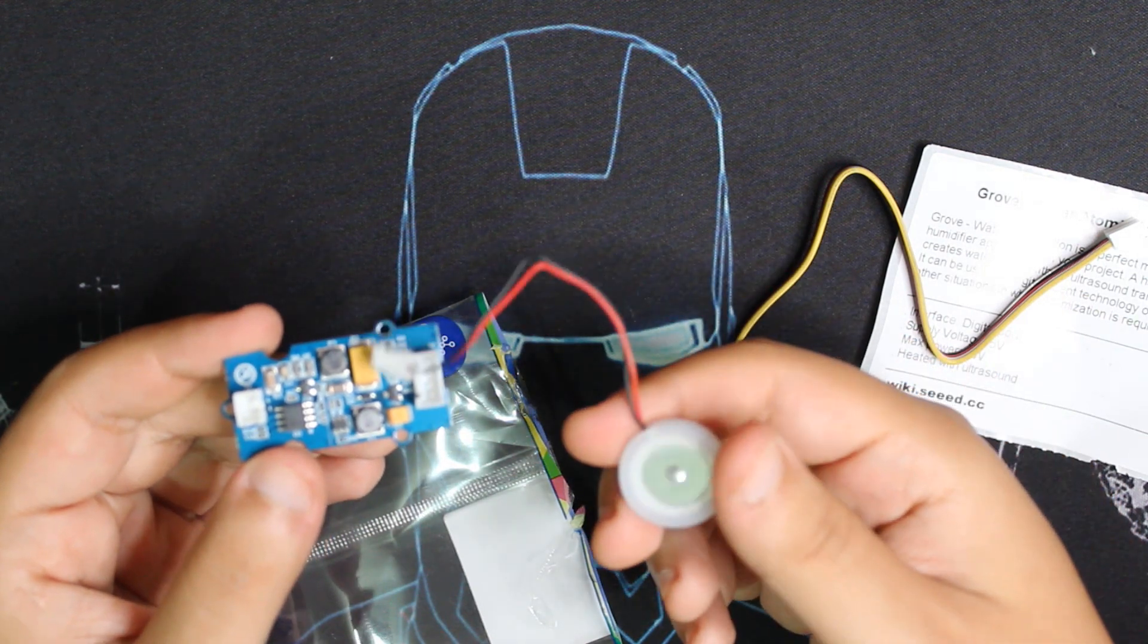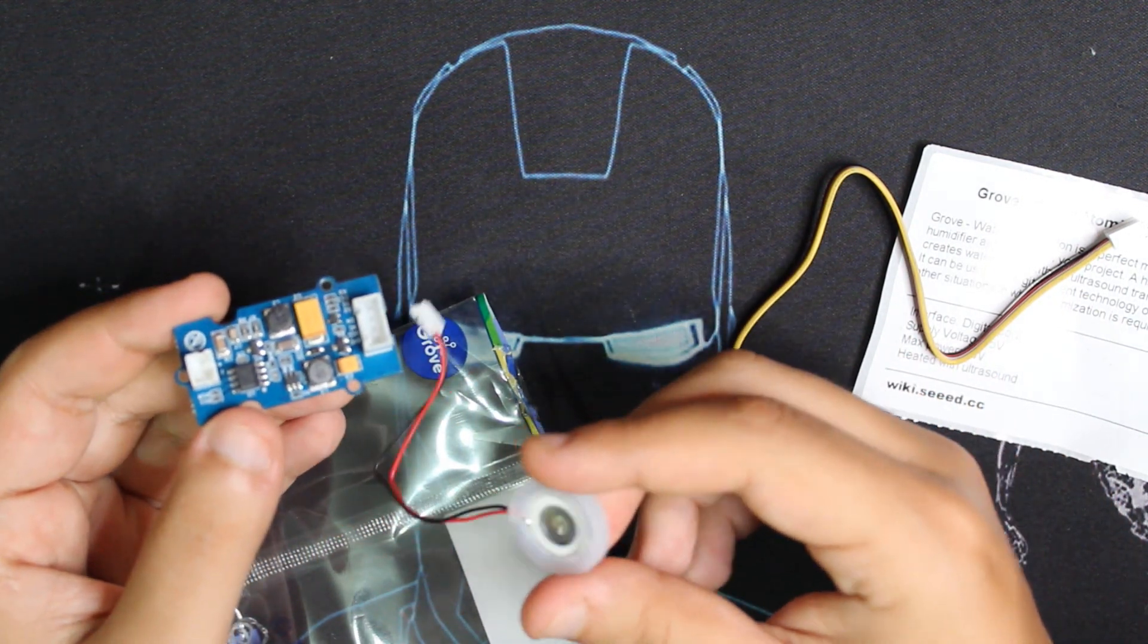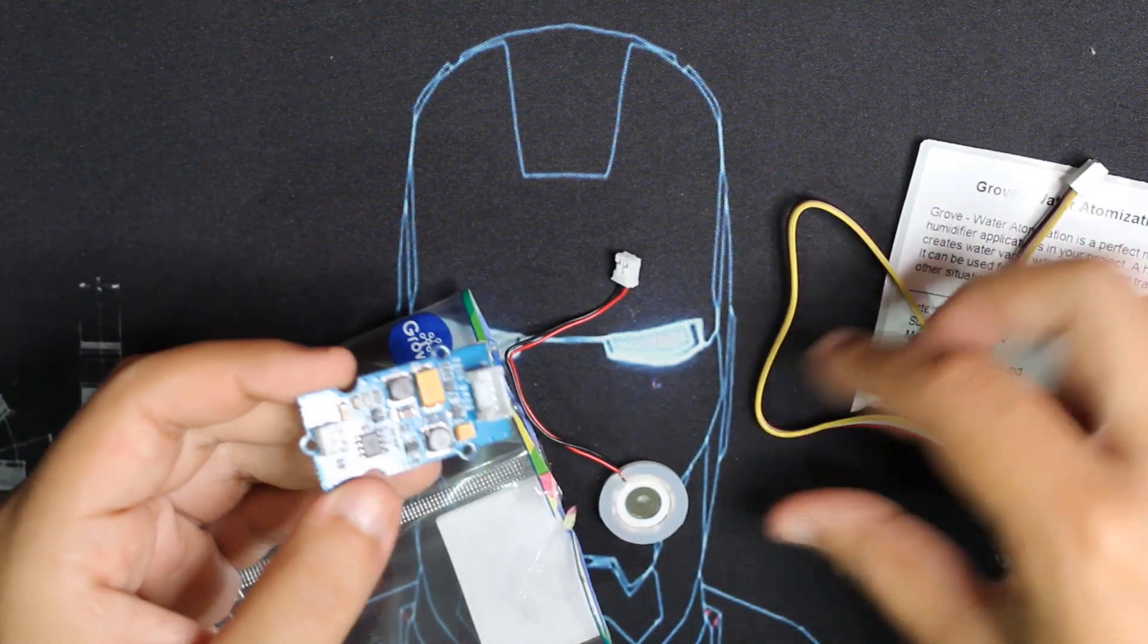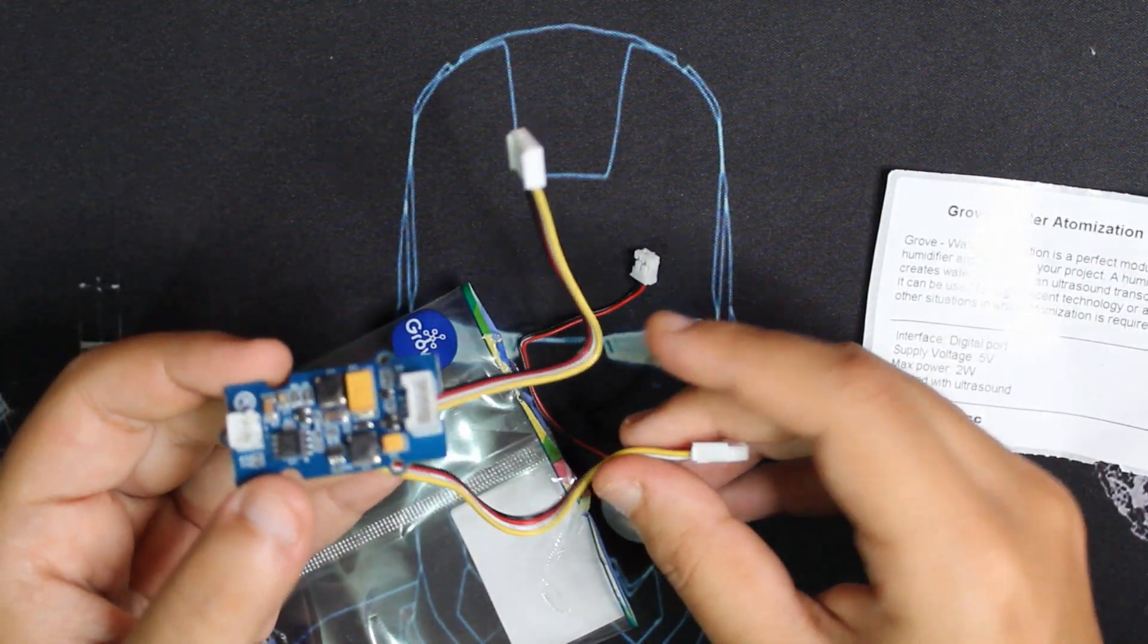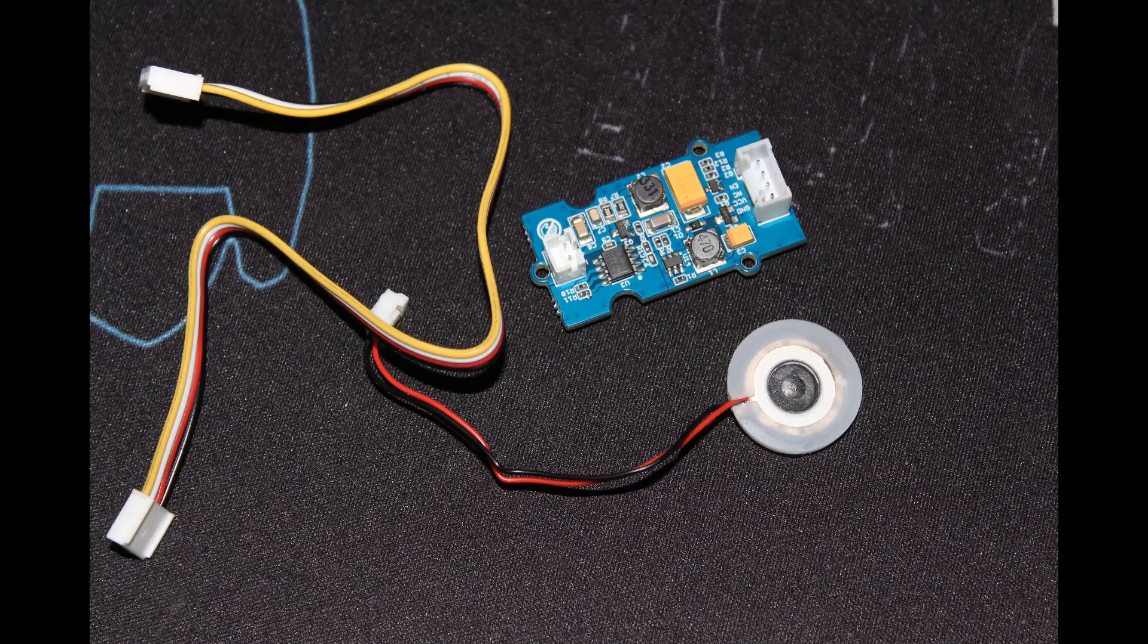Here's the heating probe—if you can call it that. It heats the water using ultrasound. Here we have a Grove cable. The Grove water atomization module is a great module for humidifier projects.